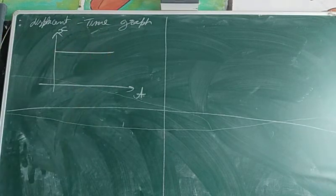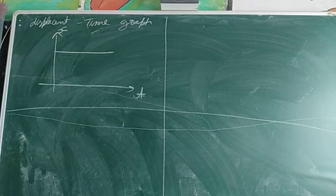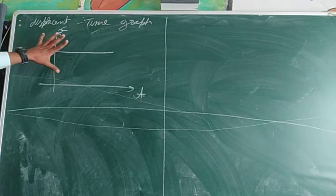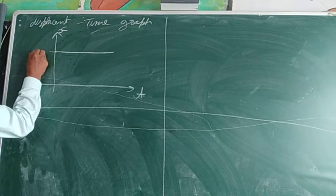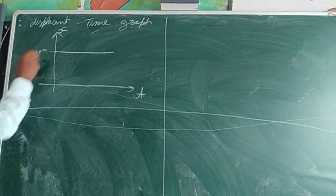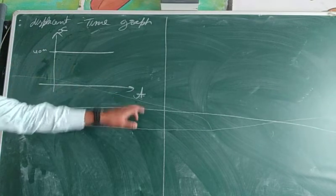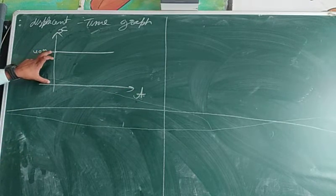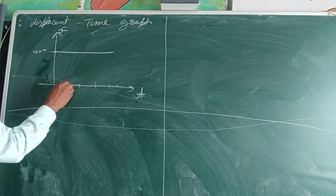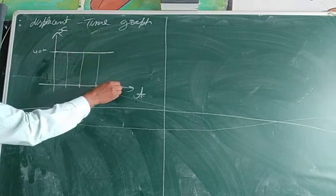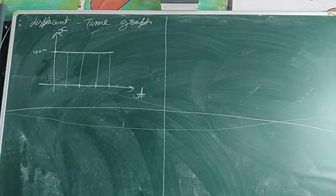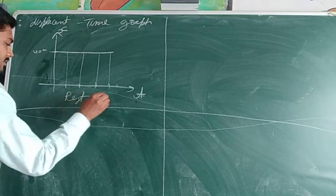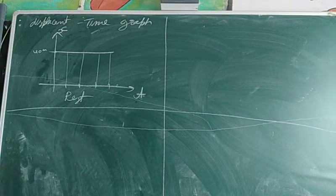Suppose I have a graph where the displacement is constant — say, 40 meters. You can see that on the y-axis we consider displacement and on the x-axis we have time. Here, displacement is constant and at every time the displacement is the same. This graph represents a body at rest.